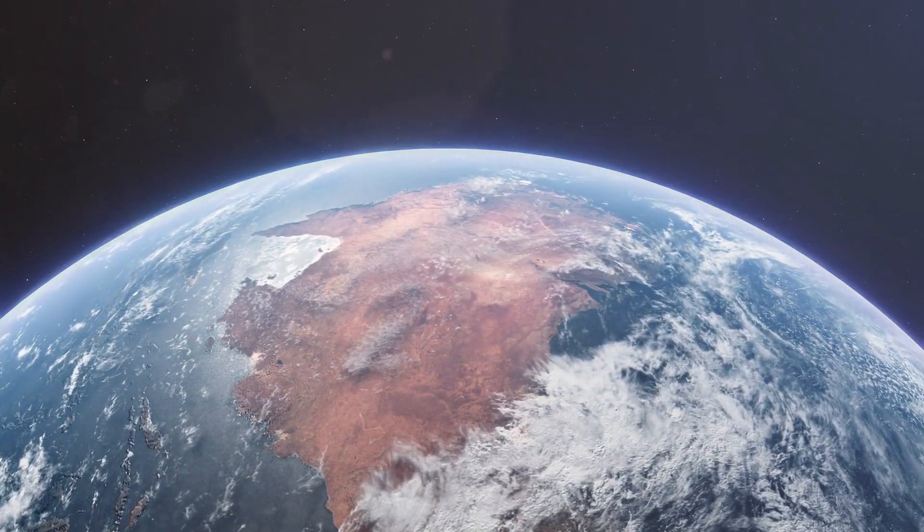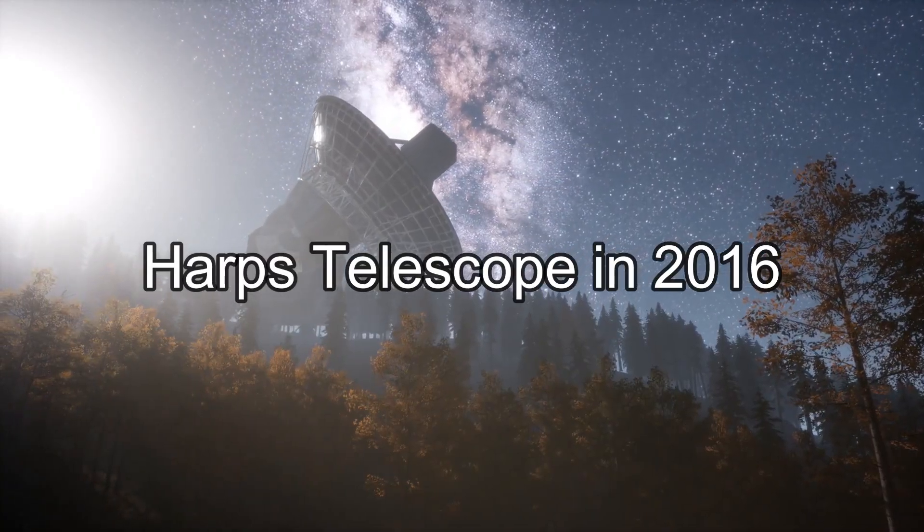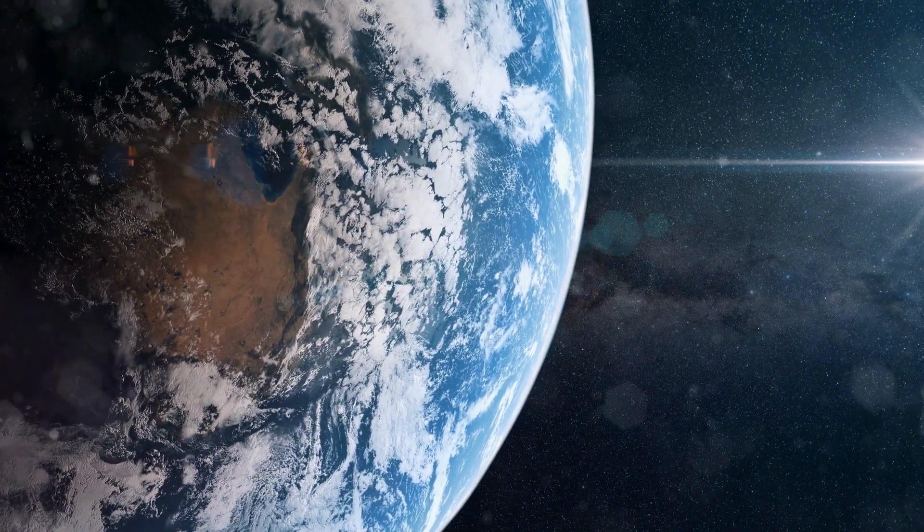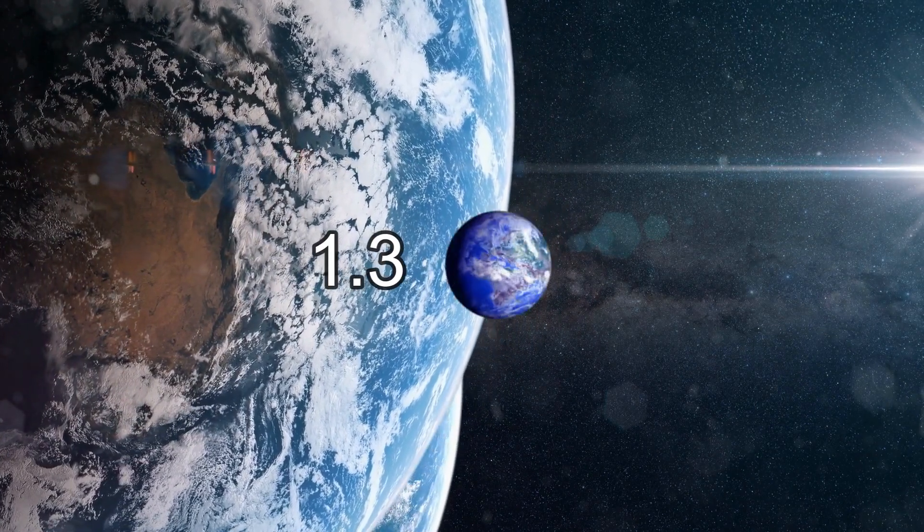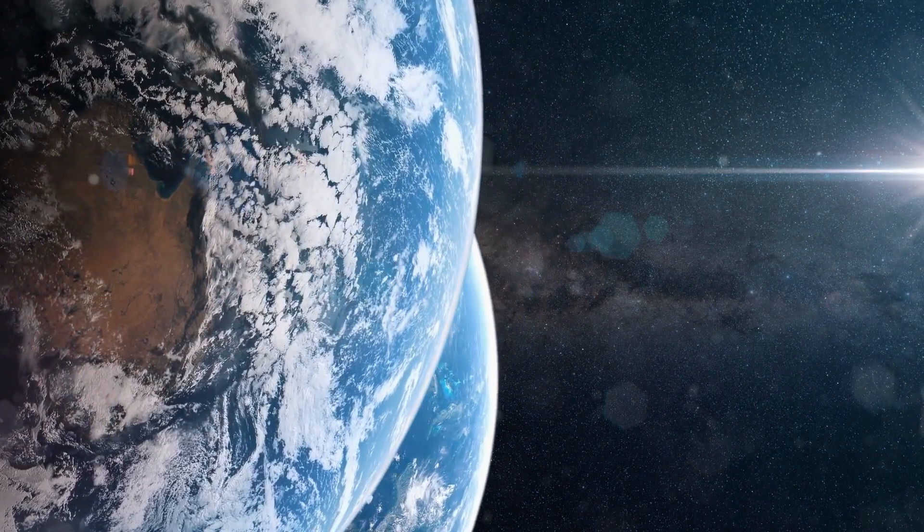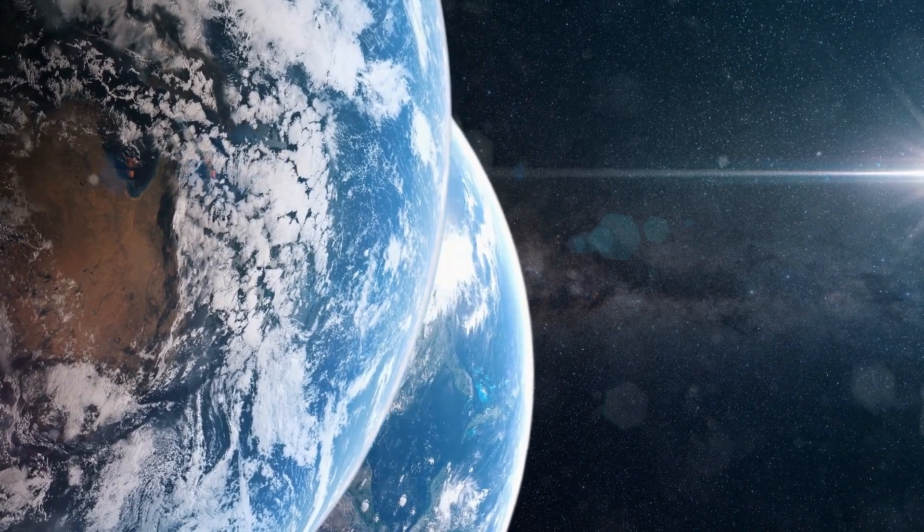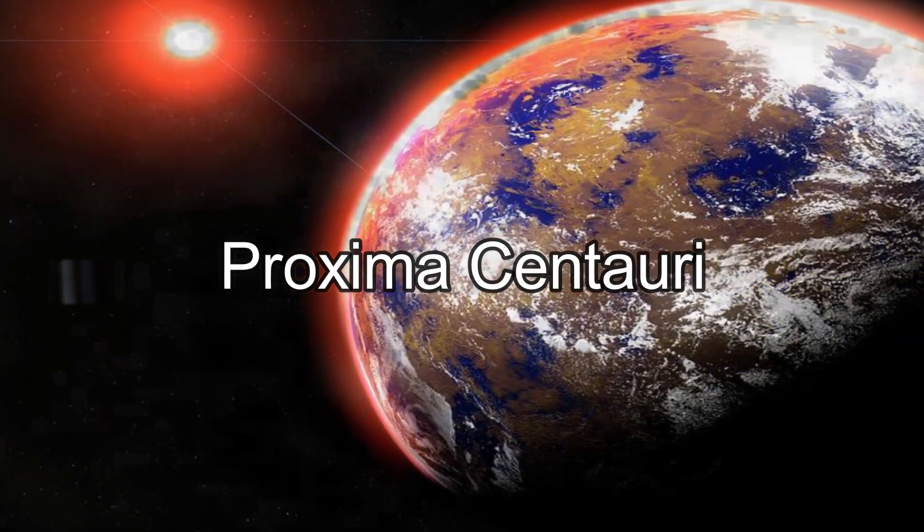At 4.2 light-years from Earth, Proxima b was discovered by the Harps telescope in 2016. Proxima b is the exoplanet that is considered the closest one to our solar system. It is thought to be at least 1.3 of the Earth's weight and is located in the habitable zone of its red dwarf star Proxima Centauri.